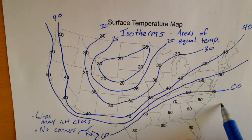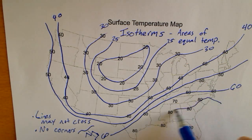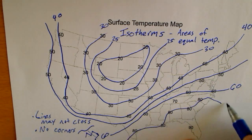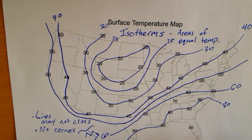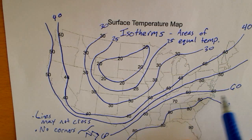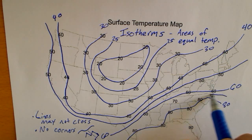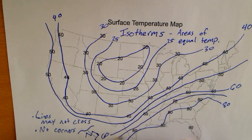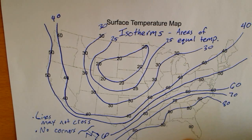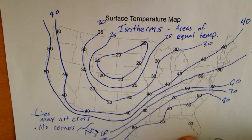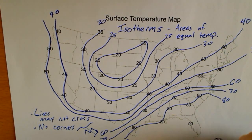There are lots of 80s here — 80, 80, 80, 80, 80. So where does that mean the 70 has to be? The 70 has to be between the 60 and the 80, so it might be kind of skinny. Those are the 70s. And the 90s — we don't have enough data to know more of what's going on in Florida, so we'll just draw a curve there. Those are the 90s.